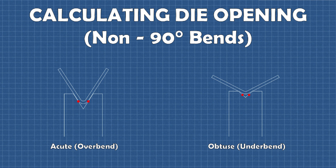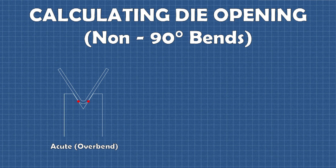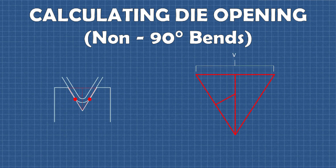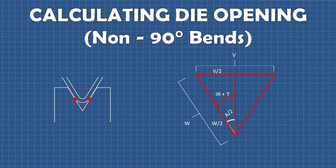With an acute or obtuse bend, we still use the same halfway point on the die wall as a reference for the optimal die opening. The only difference is the trig is a little trickier since we aren't using a 45-45-90 triangle. Starting with the smaller inside triangle, the short leg is equal to the inside radius plus the material thickness, and one angle of the smaller inside triangle will be one half the bend angle. With the larger triangle, W the hypotenuse will be twice the long leg of the inside triangle, and the short leg of this larger triangle will be half of V, the die opening size we're looking for.